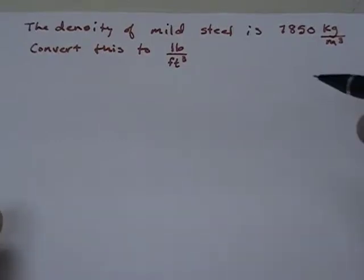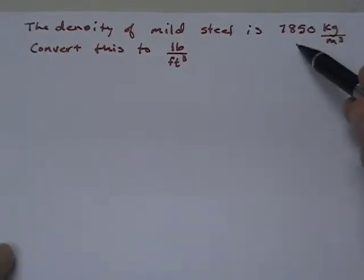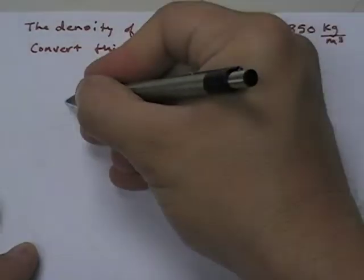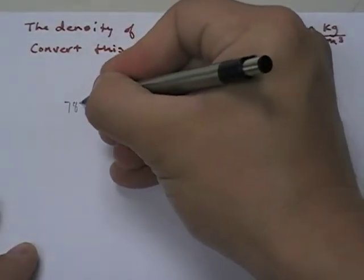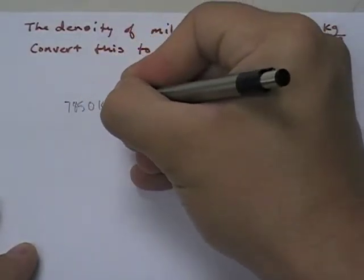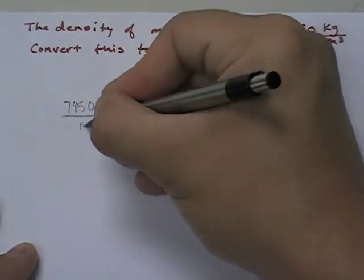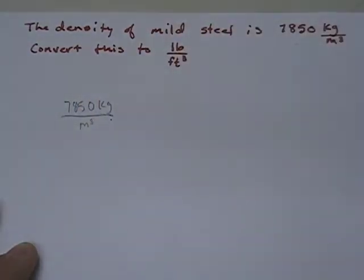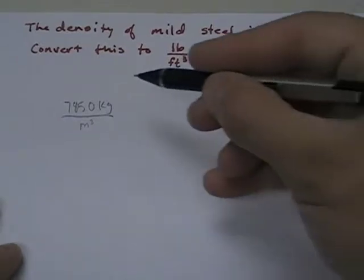So what we want to do is start with this unit and work our way across. I'm going to start with 7850 kg per meter cubed. The first thing I do is say, okay, I want to tackle this kilograms.